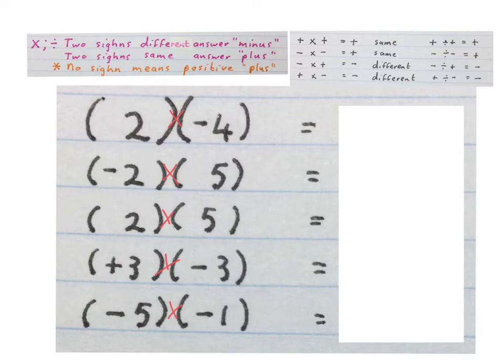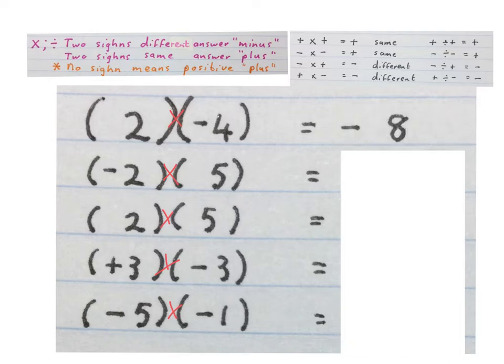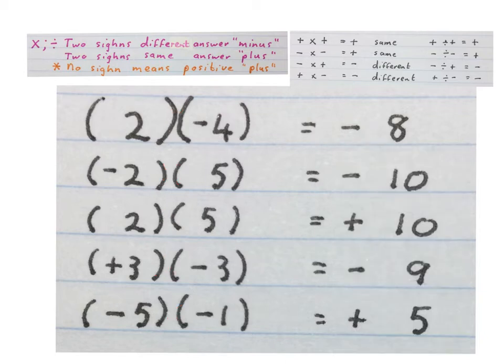Please stop the video and try and see what the answers to these questions are. Positive 2 times a negative 4 gives us a negative 8. They are different and we are multiplying. I trust you got the answers of the others right.